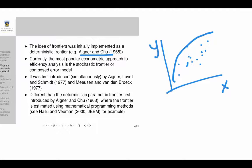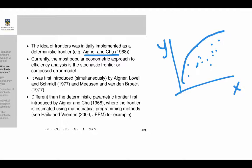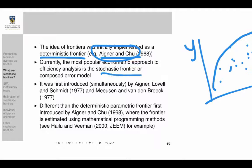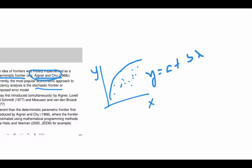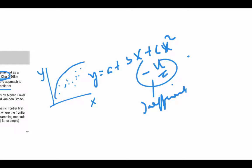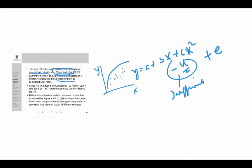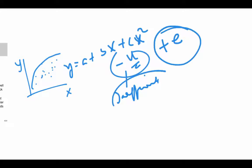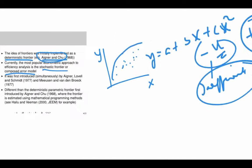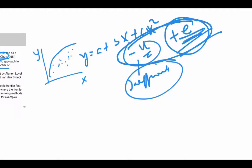Currently, the most popular approach is not the deterministic frontier but the stochastic frontier. The deterministic frontier had an error U representing inefficiency, but unlike the average production function it lacked a symmetric error term to capture noise and measurement errors. The stochastic frontier addressed this shortcoming: it was good at recognizing inefficiency but the deterministic frontier was ignoring the standard noise term. So the stochastic frontier has a composite error that accounts for both inefficiency and noise.